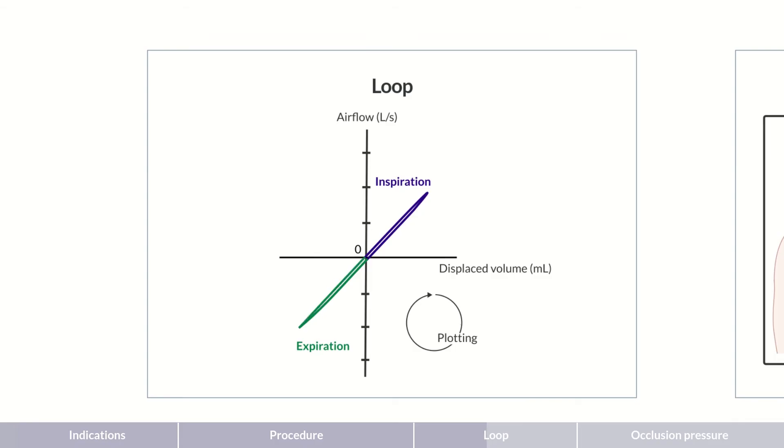The excess pressure in the alveoli decreases until it's depleted. In turn, airflow decreases again towards the end of expiration, finally dropping to zero.